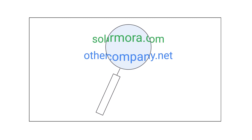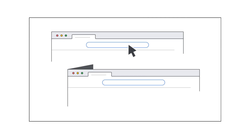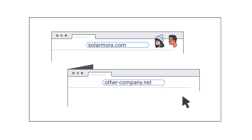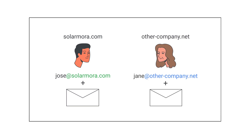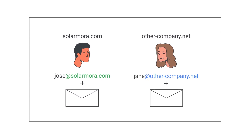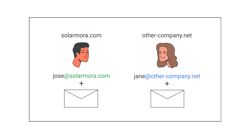Now let's take a look at the other way you can use two domains. Let's say you own the domains solarmora.com and other-company.net. You have one team for solarmora.com and another team for other-company.net. Every person gets their own email address, mailbox, and Google Drive files — some using at solarmora.com and some using at other-company.net.